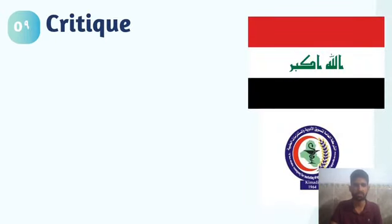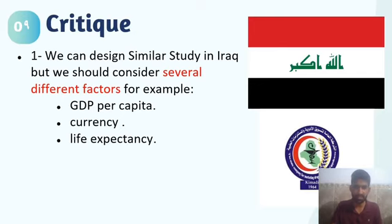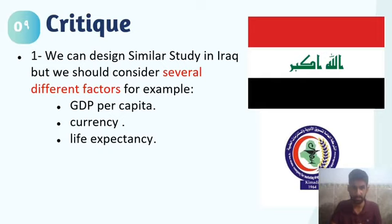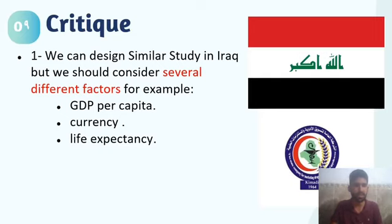Critique: First, a similar study could be designed in Iraq, but several factors must be considered — GDP per capita (Iraq's in 2021 was $4,775), currency (Iraqi dinar has lower purchasing power than the dollar), and life expectancy (Iraq has a shorter life expectancy of 70 years compared to Ecuador's 77 years).